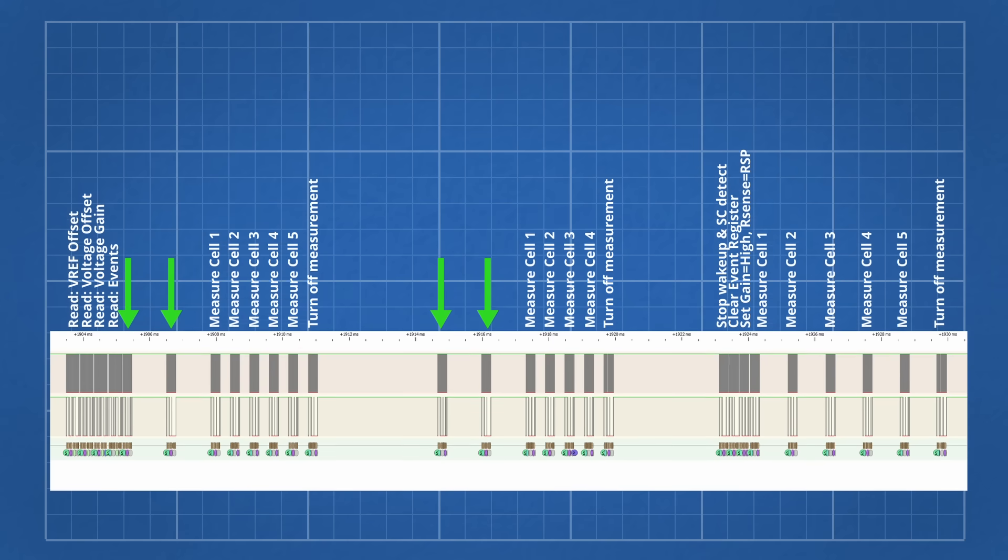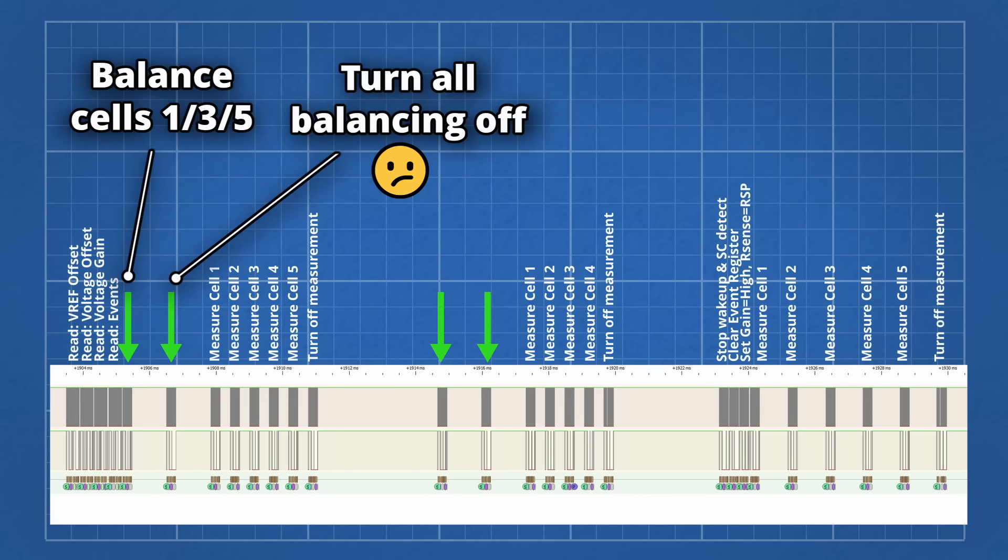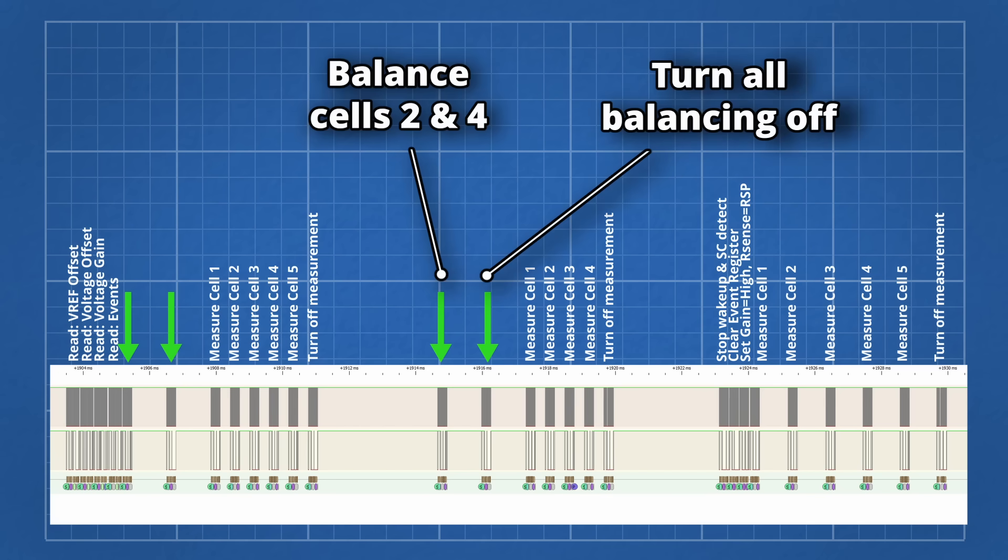You might have noticed I skipped over a few messages, and that's because I wanted to save the best for last. The first one is turning on balancing for cells 1, 3, and 5. This is good, right? Someone is finally balancing their cells. The only problem is that 1ms later they turn all balancing transistors off. Then after measuring the cells, they turn on balancing for cells 2 and 4. Then 1ms later, turn them all off again.